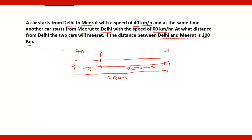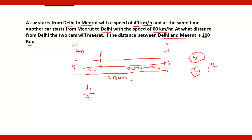Here you will observe there are five unknown quantities: S1, S2, D1, D2 and total distance. You will be supplied with any four and asked to find the fifth. Since the time taken by both cars to reach point P is the same, the ratio of D1 upon D2 equals S1 upon S2. So x upon (200 minus x) equals 40 by 60.